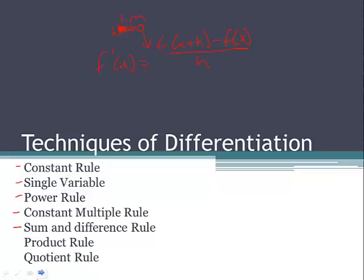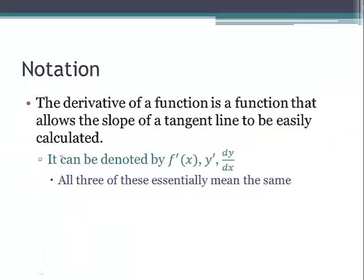So let's go ahead and start. Just remember some notation. The derivative of a function is a function that allows the slope of the tangent line to be easily calculated. It's denoted by one of three ways: f prime of x, y prime, or dy/dx. This is the derivative of y with respect to x. They really all mean the same thing for our purposes, though we'll go into how to use dy/dx a little differently later in the year.